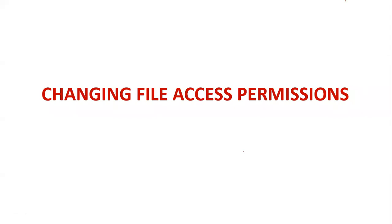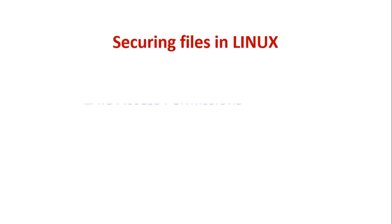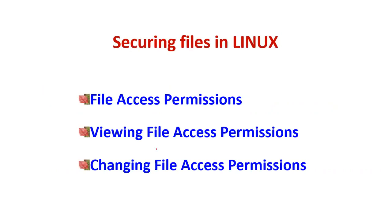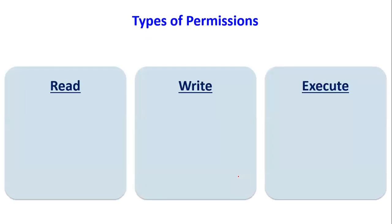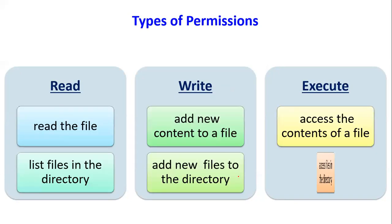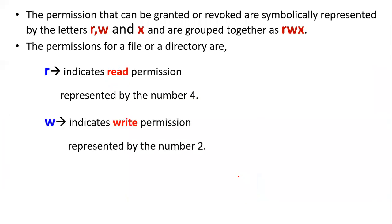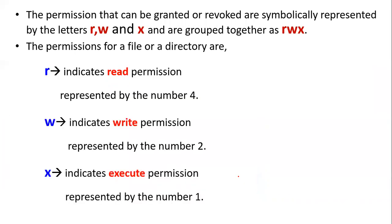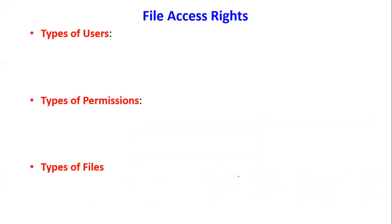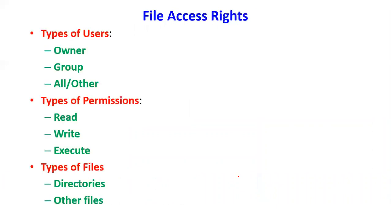In the last class we saw the introduction of file access permissions, viewing files using the ls command. Today we will see how to change file access permissions. The types of permissions are read, write, and execute. The letter r means read, w means write, x means execute, with numbers 4 for read, 2 for write, and 1 for execute. The types of users are owner, group, and all other users.